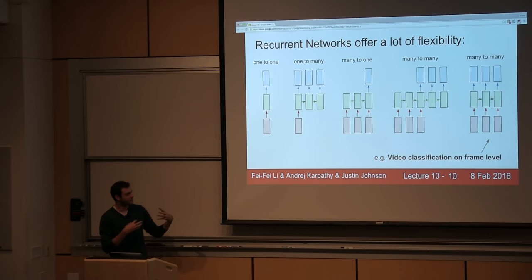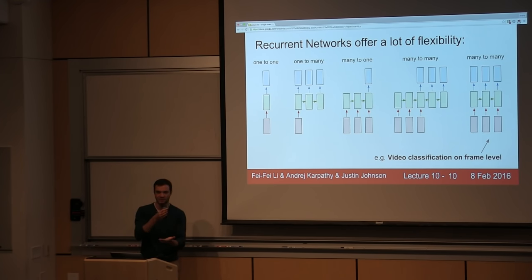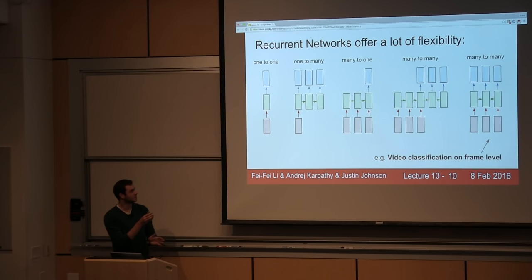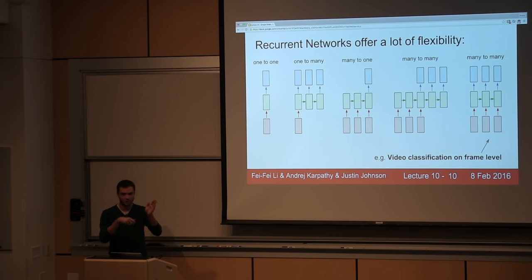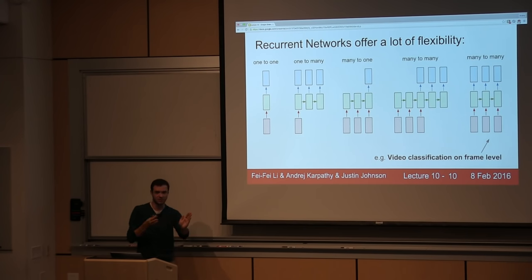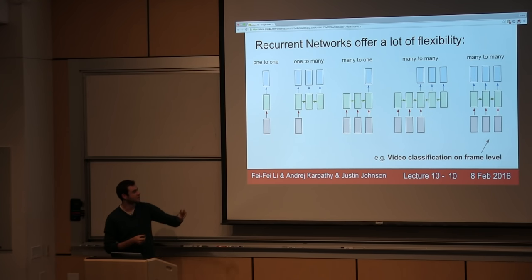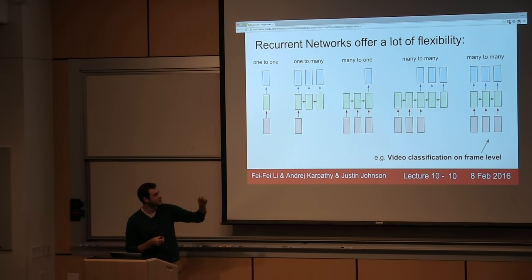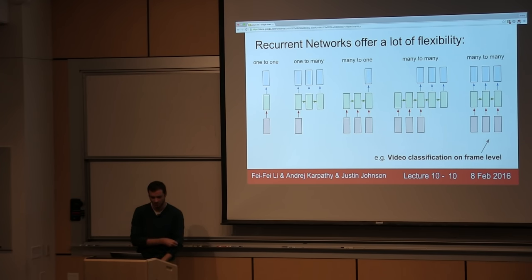And in the last case, for example, we have video classification where you might want to classify every single frame of a video with some number of classes, but crucially you don't want the prediction to be only a function of the current frame of the video, but also all the frames that have come before it. Recurrent neural networks allow you to wire up an architecture where the prediction at every single time step is a function of all the frames that have come in up to that point.